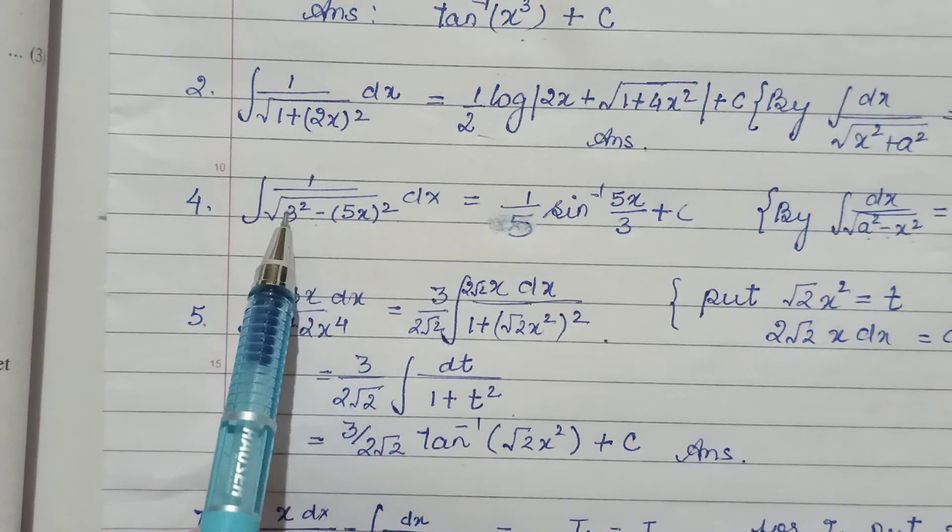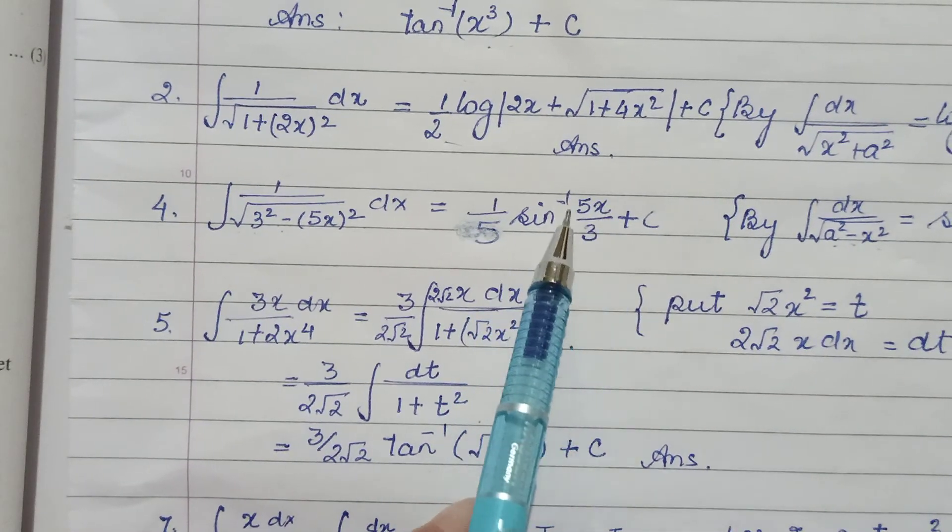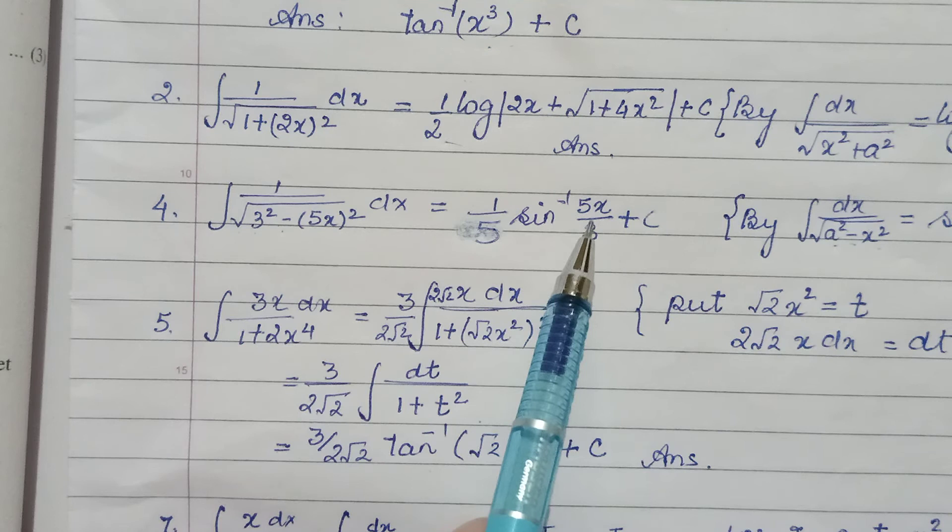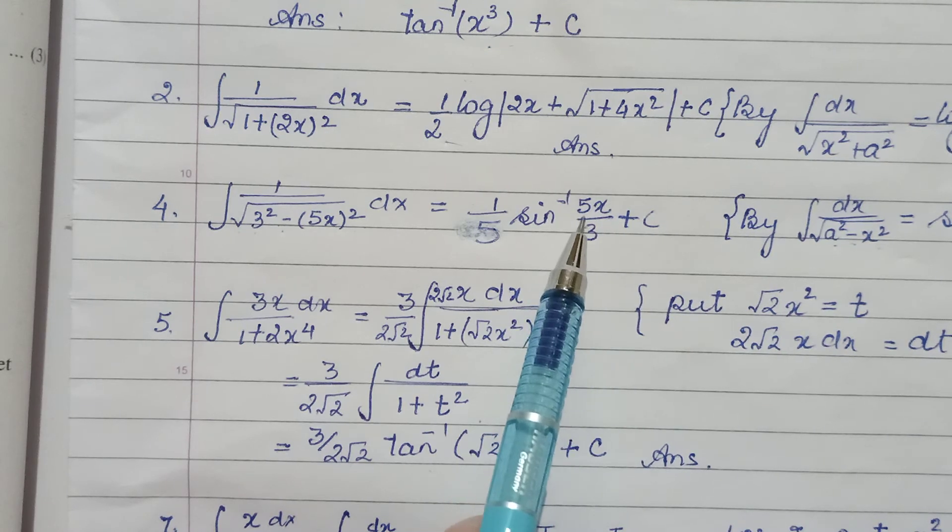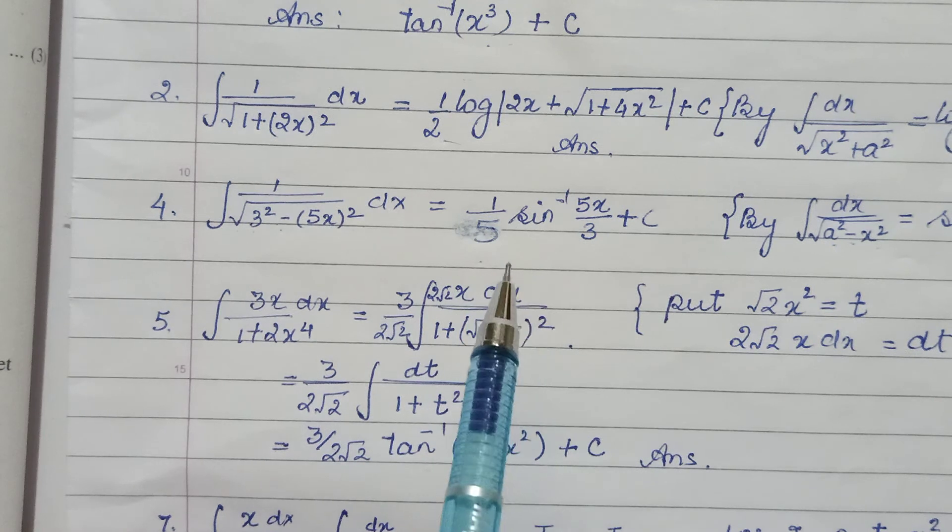Here x is 5x and a is 3. So we have sin⁻¹(5x/3). Since it's a scalar, you divide by 5. If you want to substitute, it will be like this.